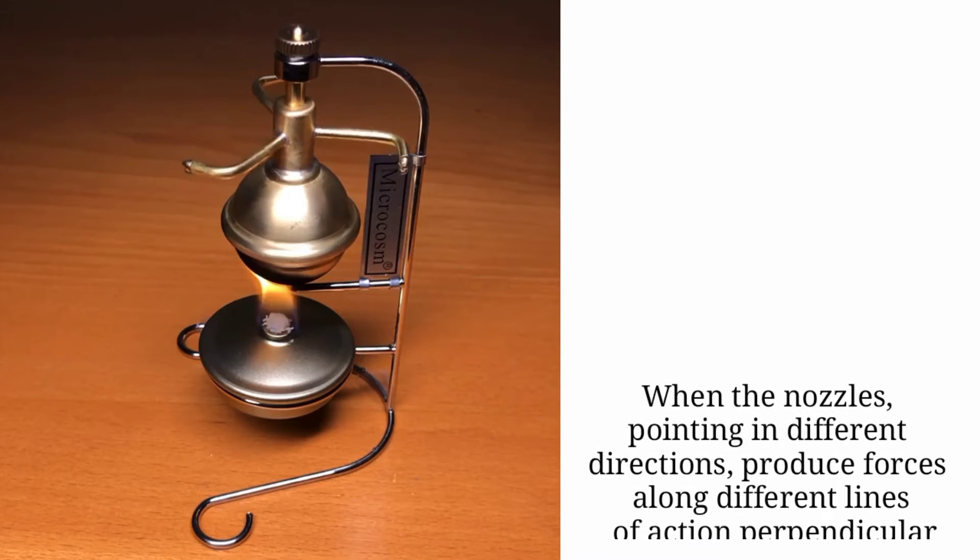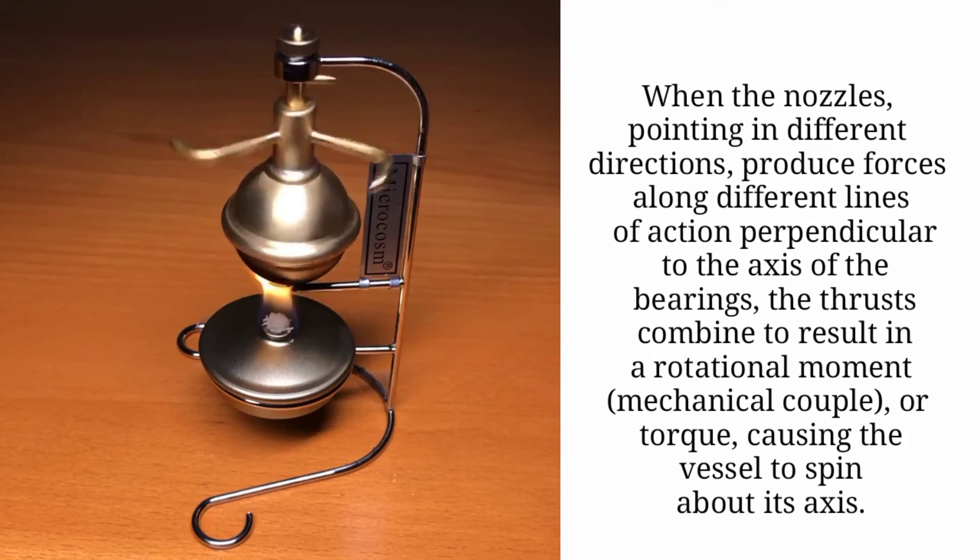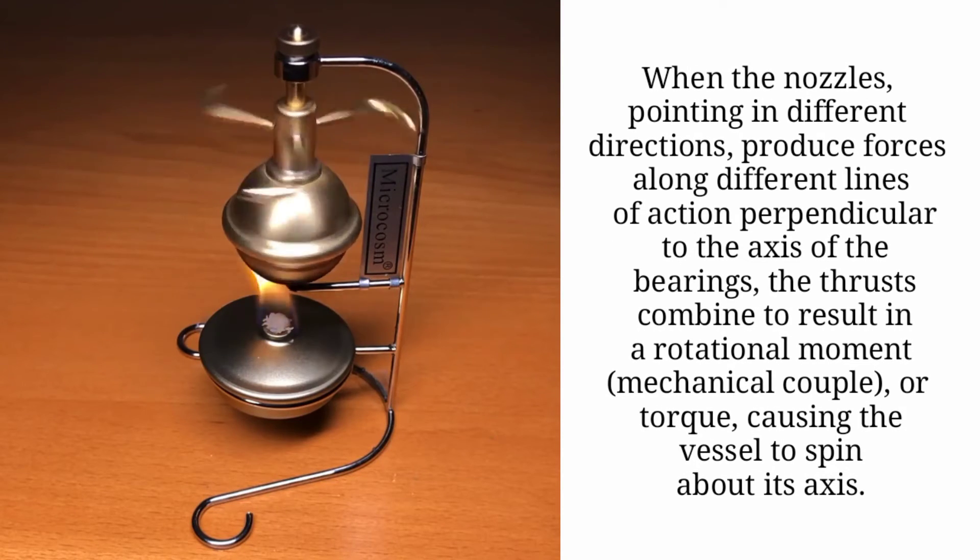When the nozzles, pointing in different directions, produce forces along different lines of action perpendicular to the axis of the bearings, the thrusts combine to result in a rotational moment, mechanical couple, or torque, causing the vessel to spin about its axis.